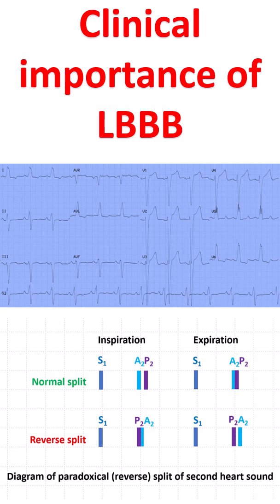In the normal conduction sequence, the left bundle branch is activated first. Hence, a left bundle branch block can affect the initial vector in the ECG, leading to errors in interpretation of Q waves in myocardial infarction.